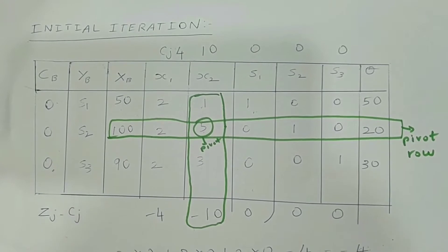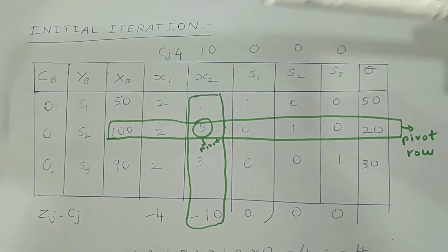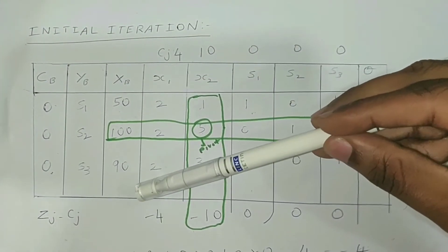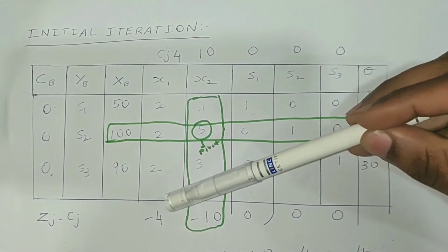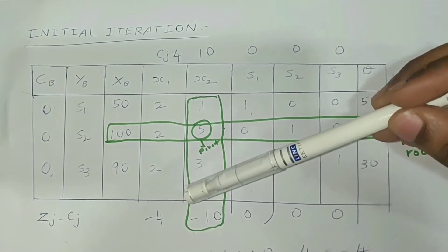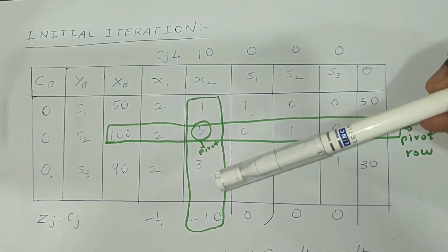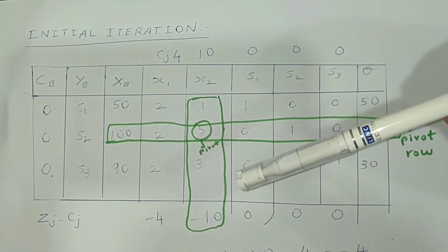The initial iteration is now over. Since zj minus cj has a negative value, we should proceed to the next iteration, which is the second iteration.